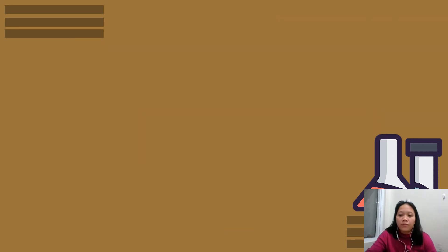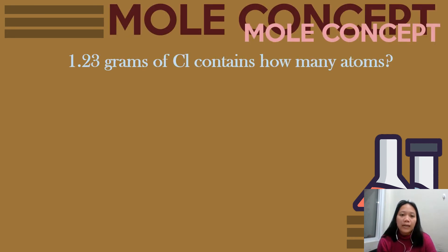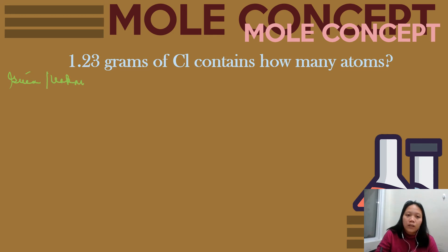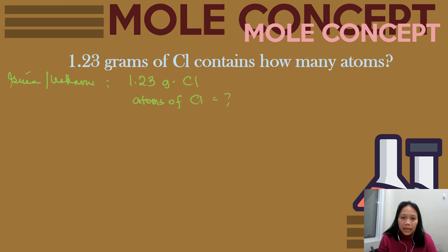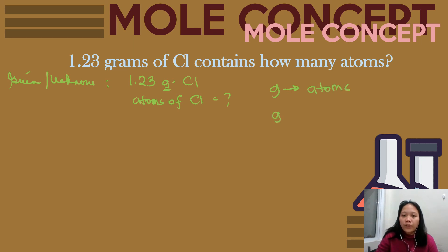Last problem: given 1.23 grams of chlorine, how many atoms are there? You are given 1.23 grams of chlorine and asked how many atoms of chlorine there are. Our goal is to convert grams into atoms. We cannot directly convert grams into atoms, so we must first convert grams into moles, then use those moles to find the number of atoms — that is why two conversion factors are needed.